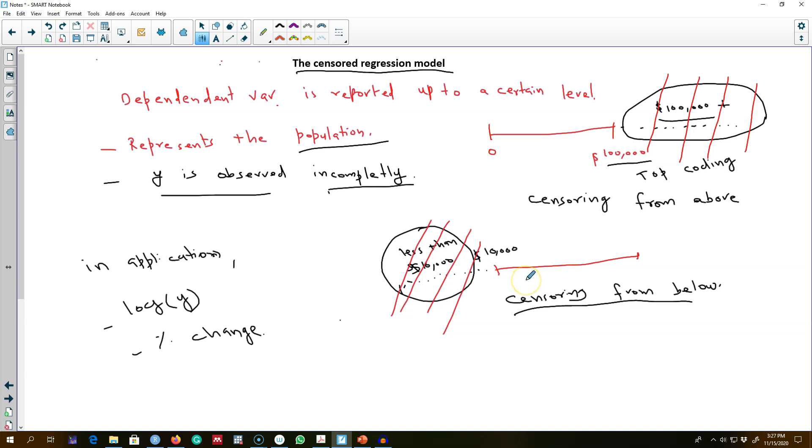So in this case, we only observe the outcome and the explanatory variable if the outcome is less than or equal to a certain value, which in this case was income below $100,000 or income above $10,000.